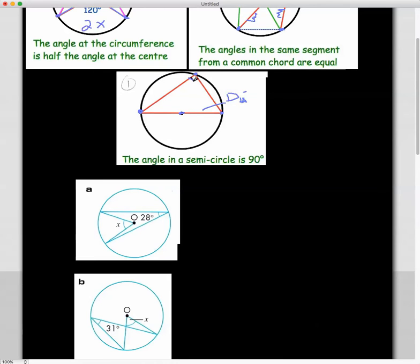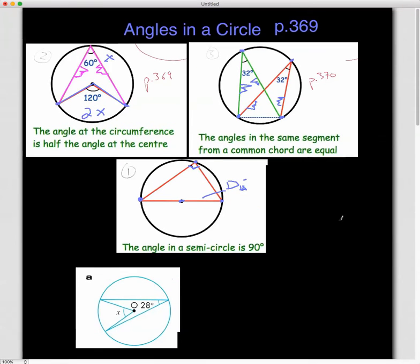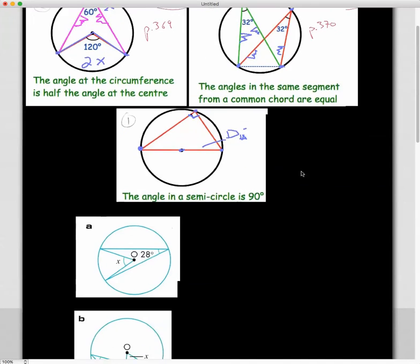It creates a 90 degree angle here. So these three theorems we have: double the angle off the center, same angle if you're eating the two points, and finally this one where you create a 90 degree angle from the diameter.